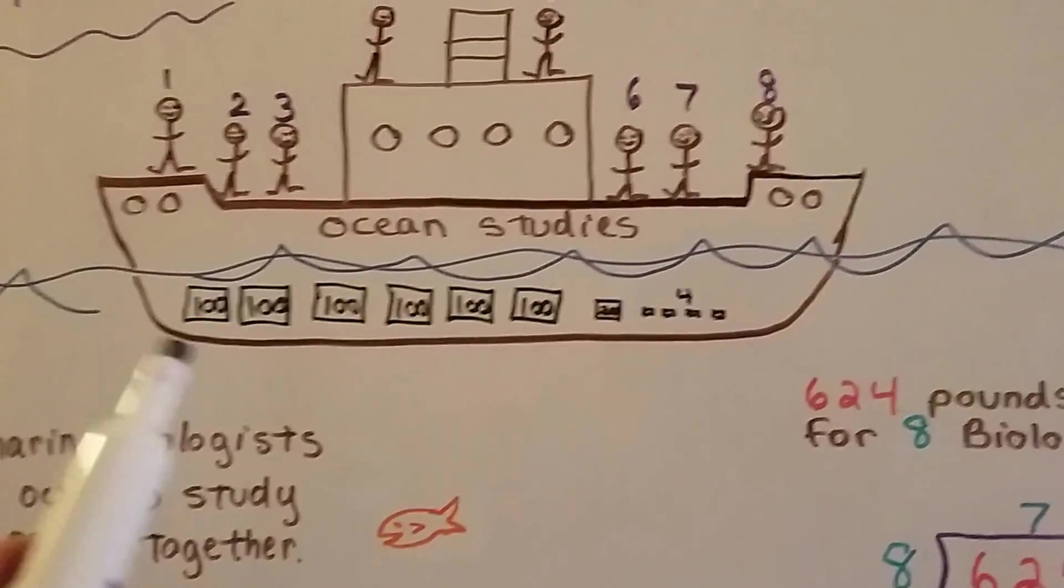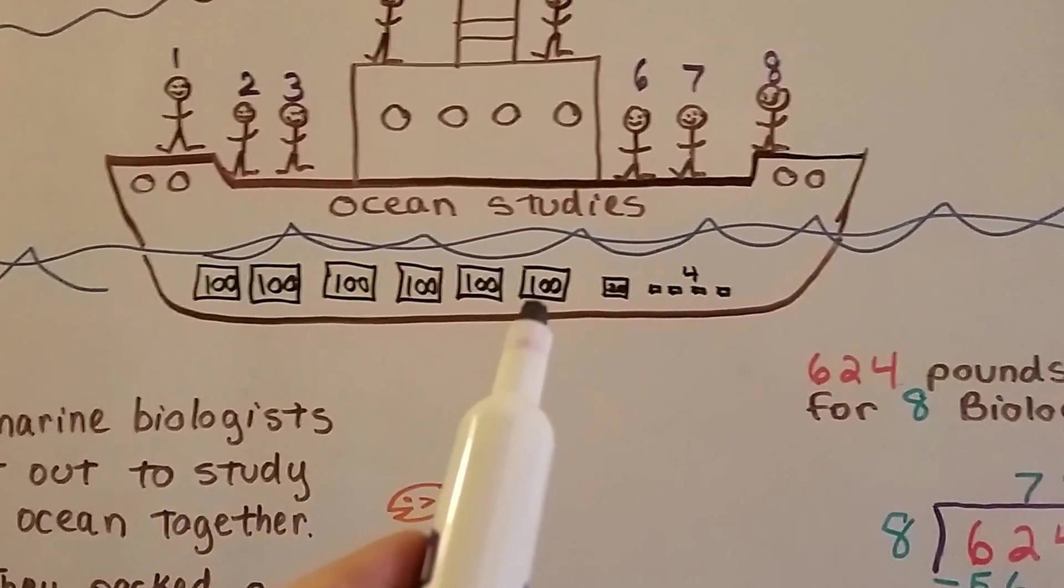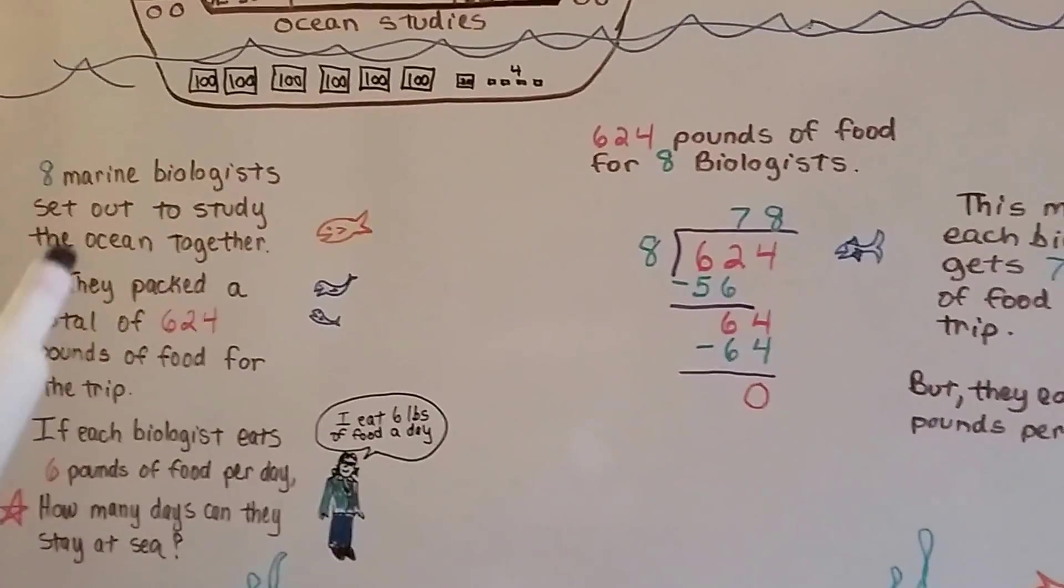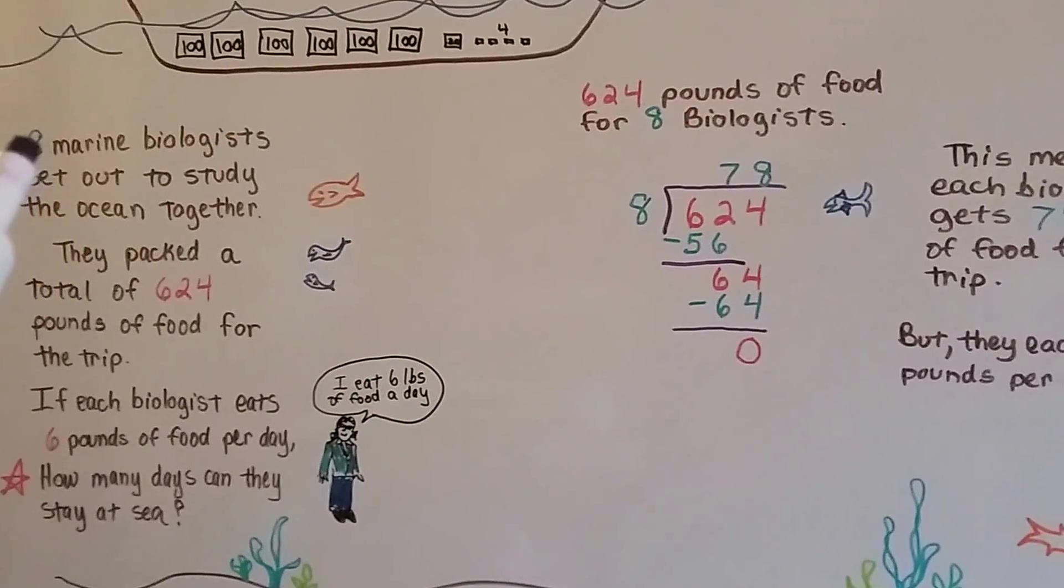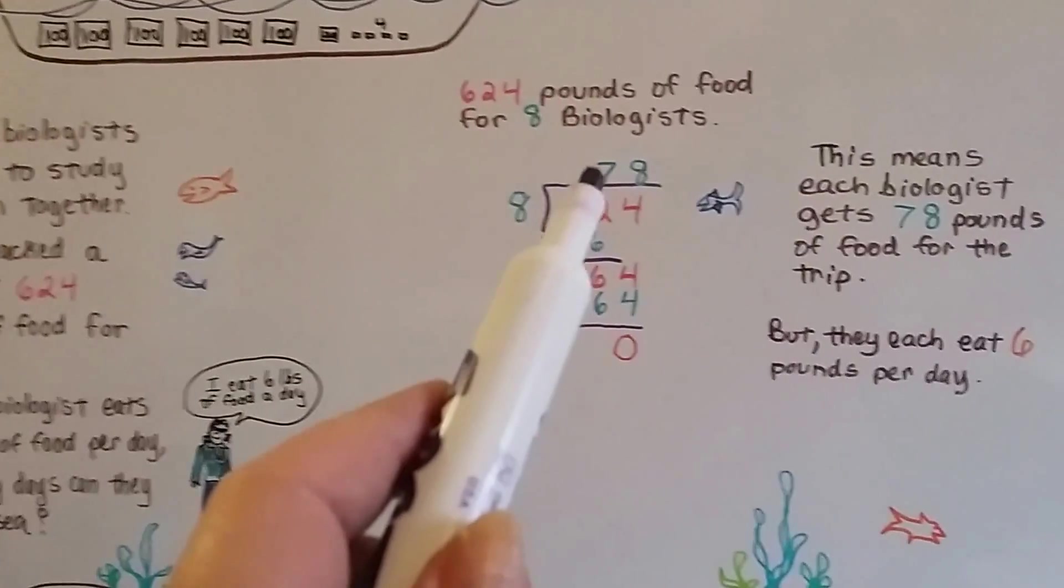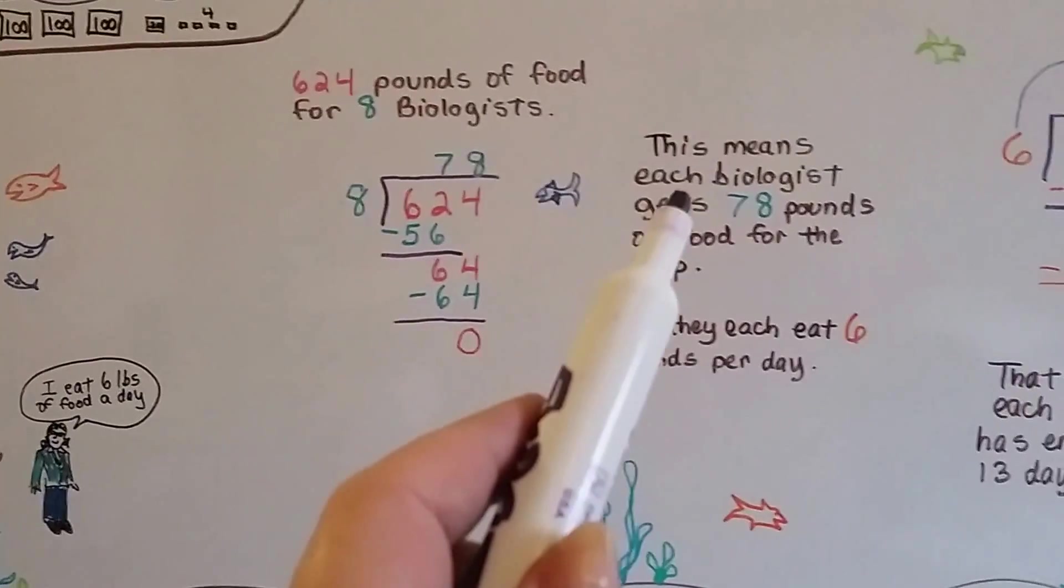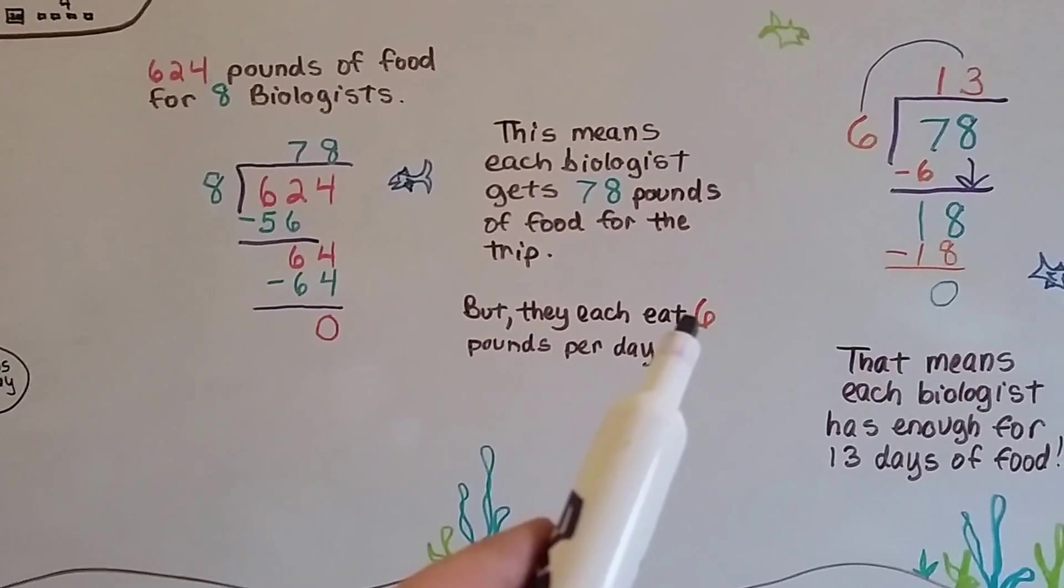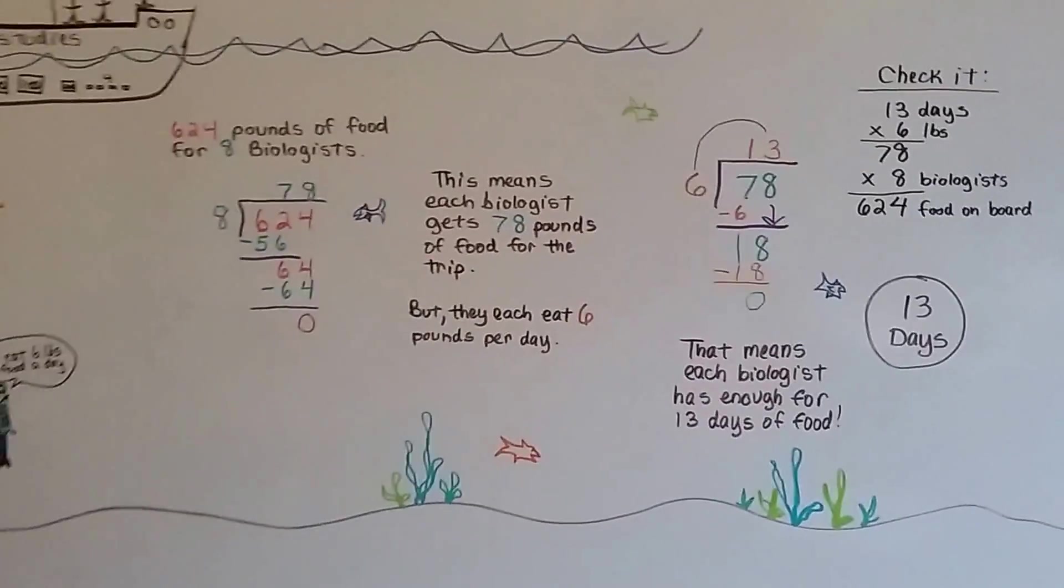So drawing a diagram, you don't need to draw the boat, but you could draw the squares for the food. So, we split the 624 between the eight marine biologists and got 78 for each biologist. And then we split the 78 pounds of food into six pound groups. And that told us that there were 13 days that they'd be able to stay out at sea.